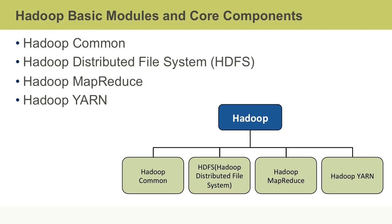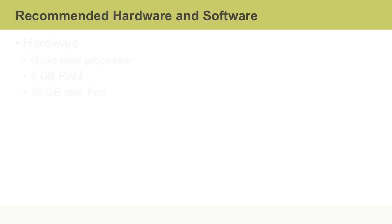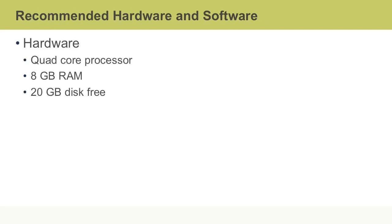HDFS and MapReduce are core components of Hadoop. To install and run Hadoop with proper performance, it is recommended for your computer to have a quad-core processor, 8GB of RAM, and 20GB of free disk space.